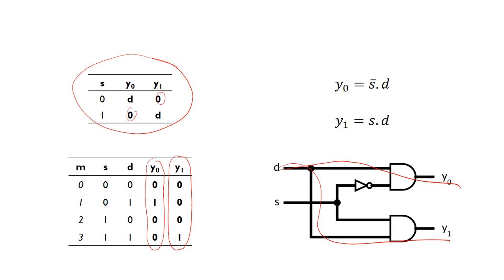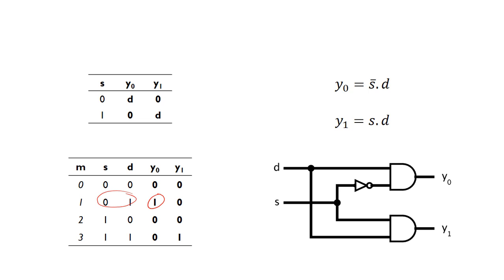From looking at these output columns, for y0, there's only one row where the output is a 1. That gives us one minterm: s̄ and d. So that gives the expression for y0.